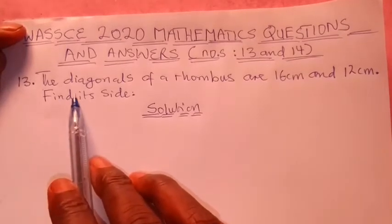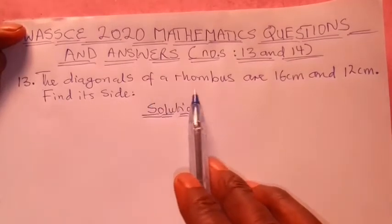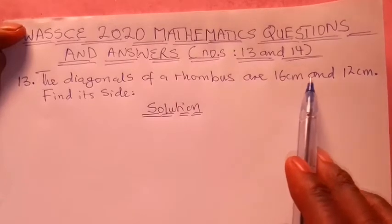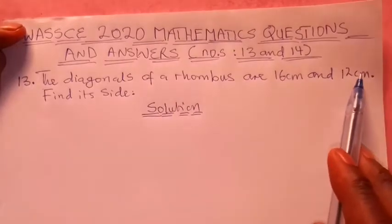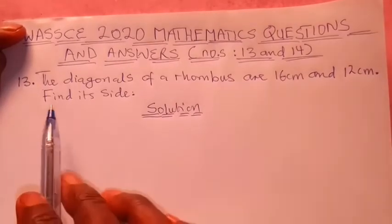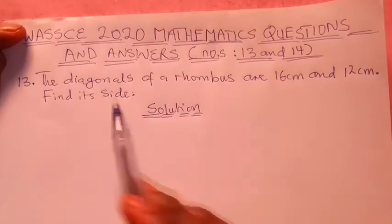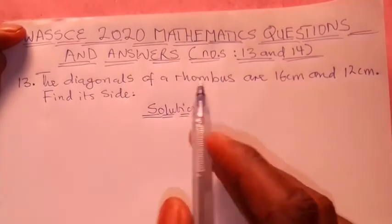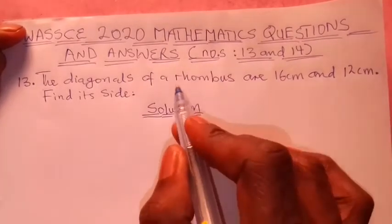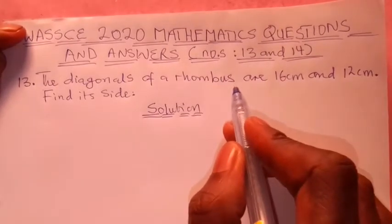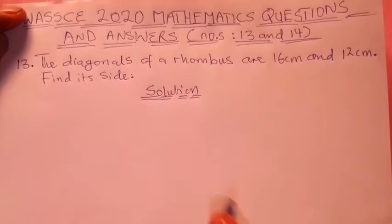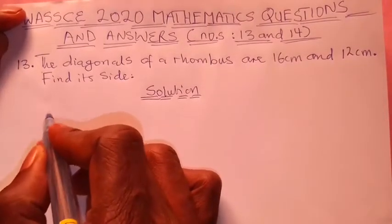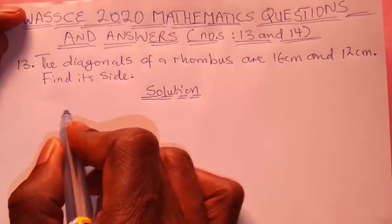The question says: the diagonals of a rhombus are 16 cm and 12 cm. Find its side. For you to solve this question you need to understand what a rhombus is. Let's quickly take the solution to this problem — I'm going to draw up a rhombus.